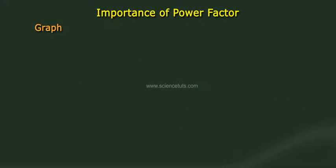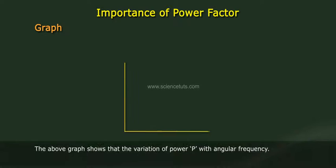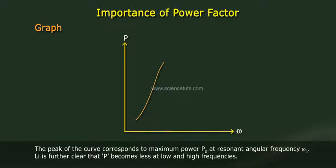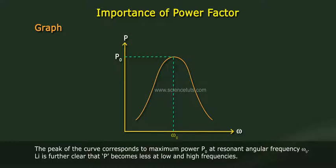Graph: The above graph shows the variation of power P with angular frequency. The peak of the curve corresponds to maximum power P₀ at resonant angular frequency omega-naught. It is further clear that P becomes less at low and high frequencies.